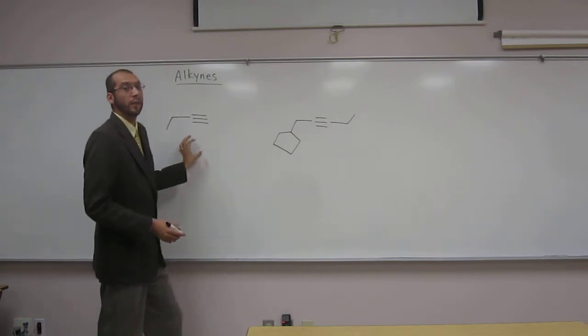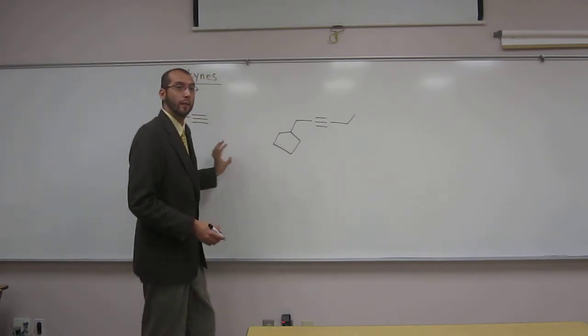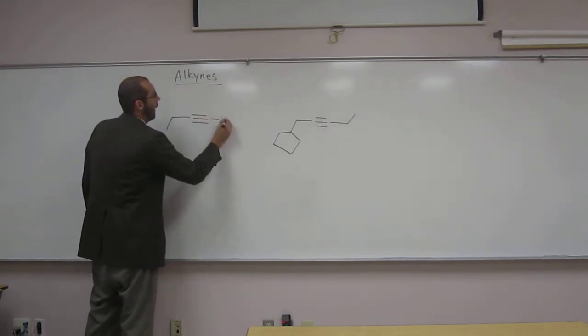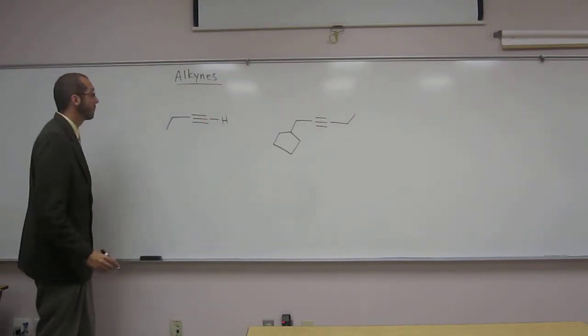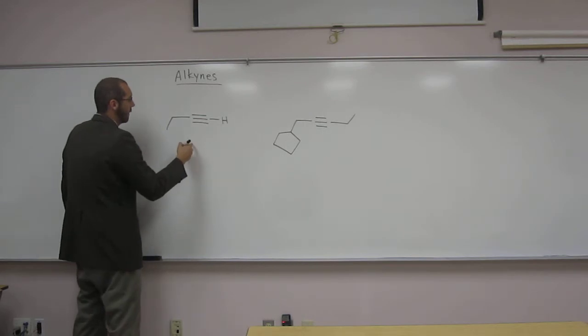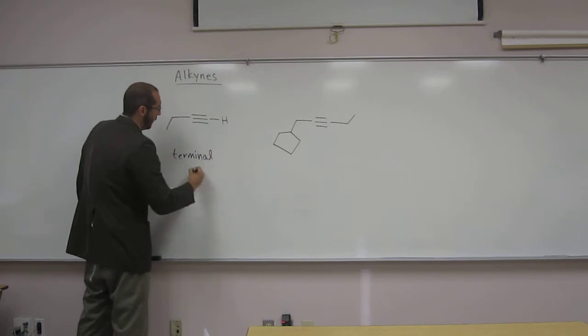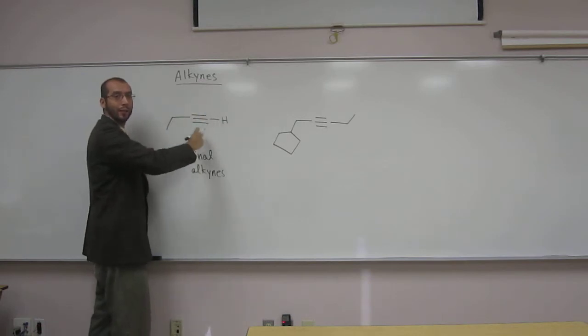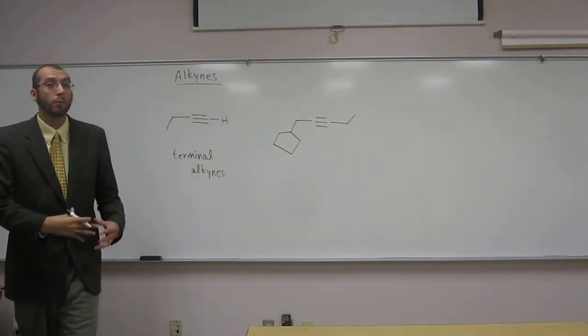These are effectively different types of alkynes. This one here, of course, has a hydrogen there. These kinds of alkynes are called terminal alkynes. Why? Because the alkyne substituent is at the terminus of the structure.